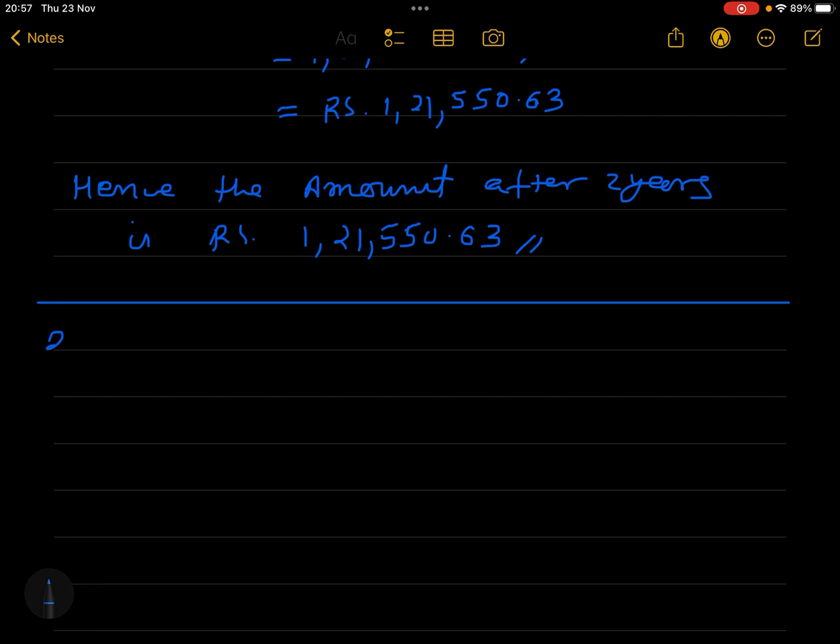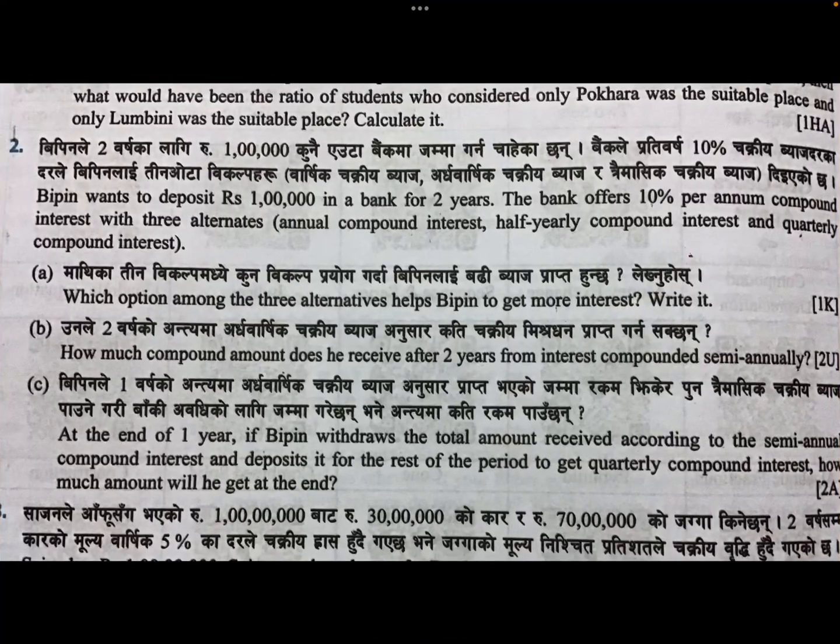Now we will move to the third question, that is question number C. Let us see the question first. At the end of one year, if Bipin withdraws the total amount received according to semi-annual compound interest and deposits it for the rest of the period to get quarterly compound interest, how much amount will he get?